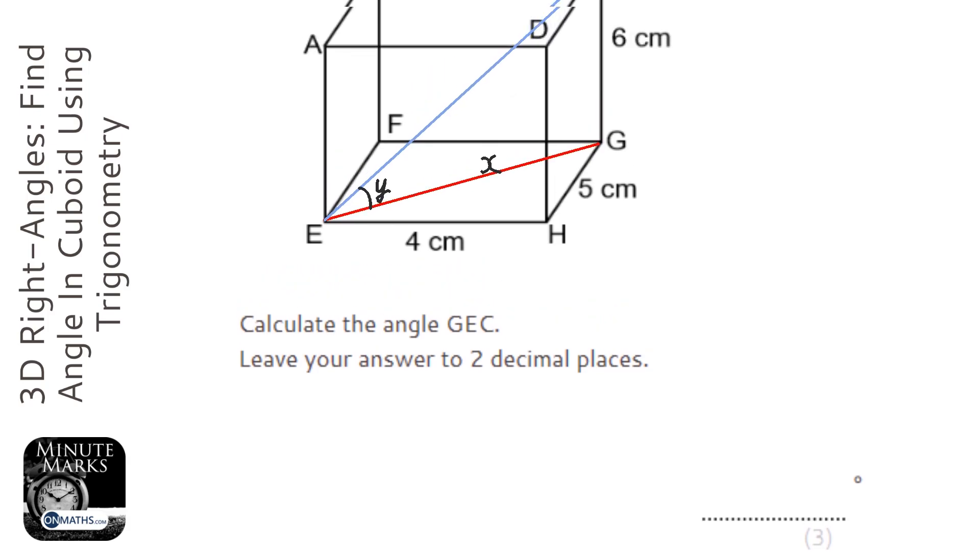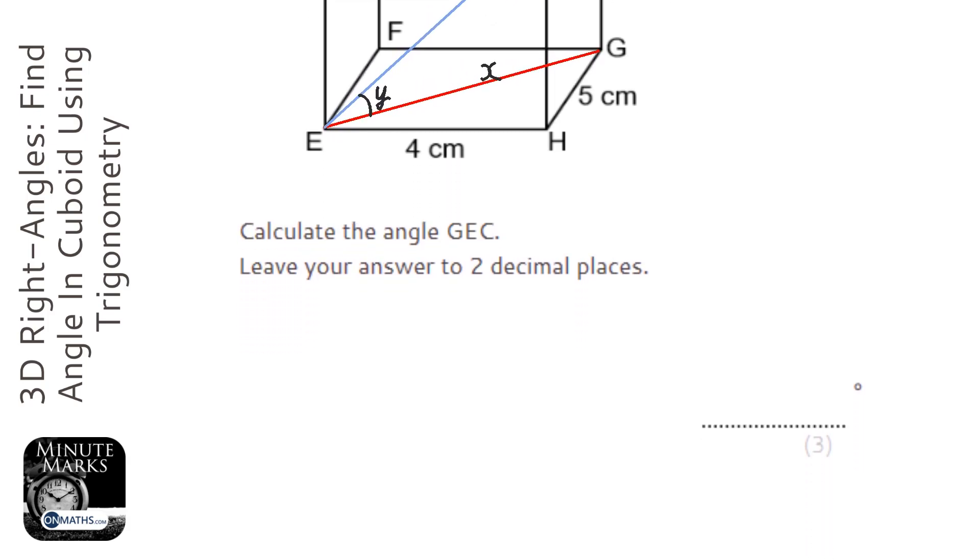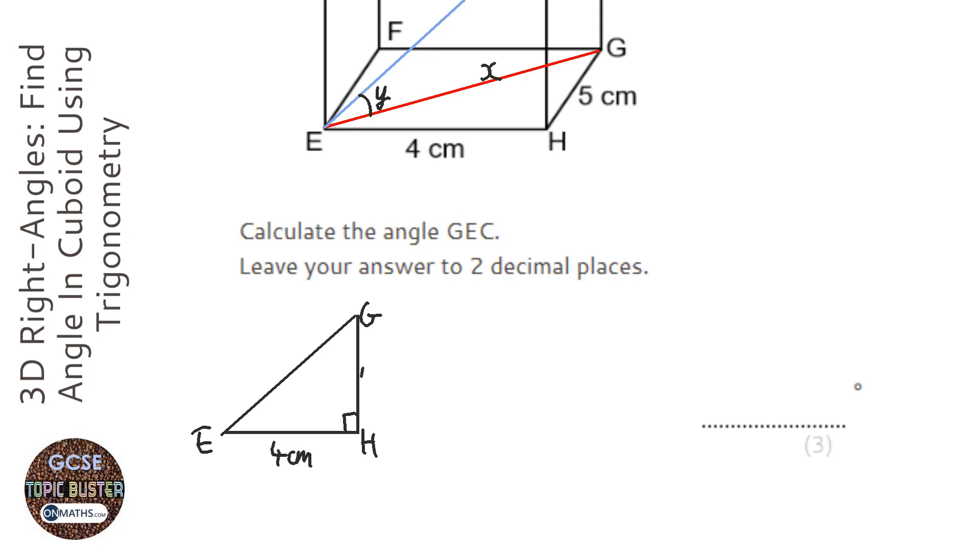So I'm going to draw out triangle EGH first. So EHG, we've got four centimeters there, five centimeters there, and we've got X there.